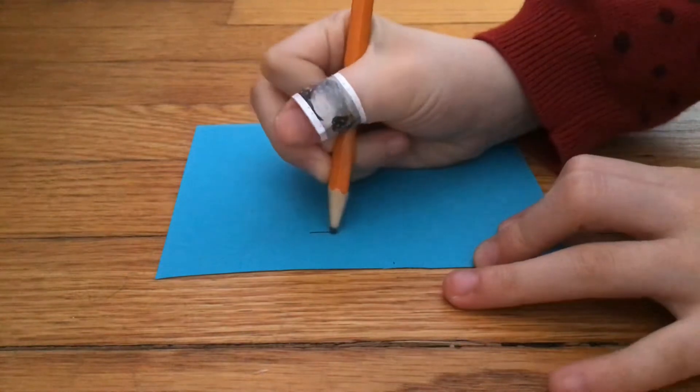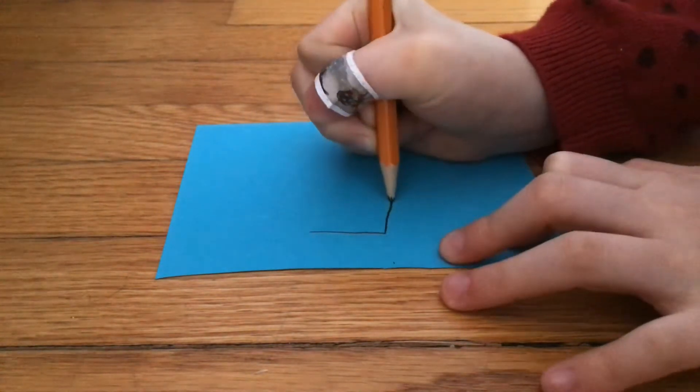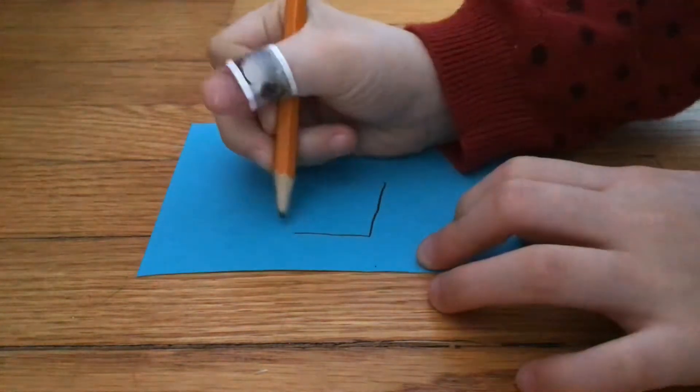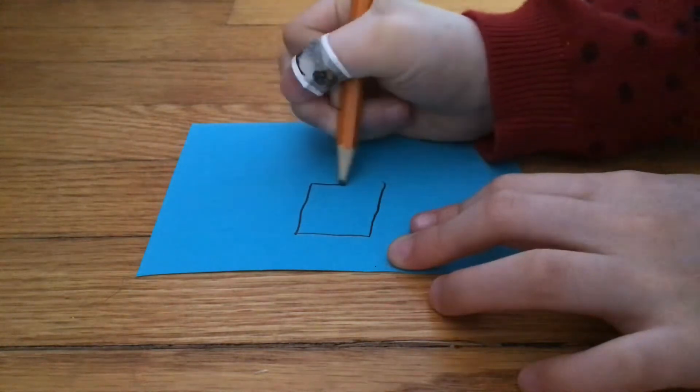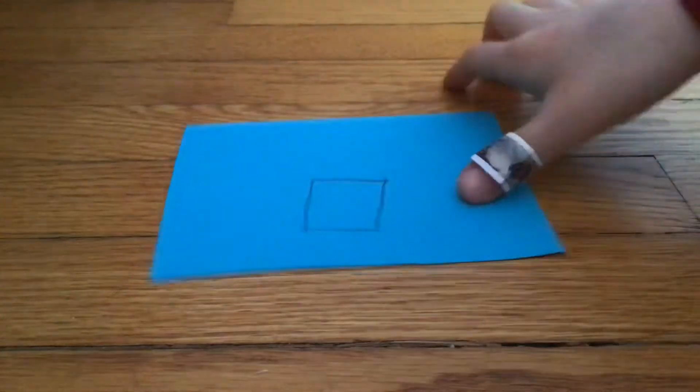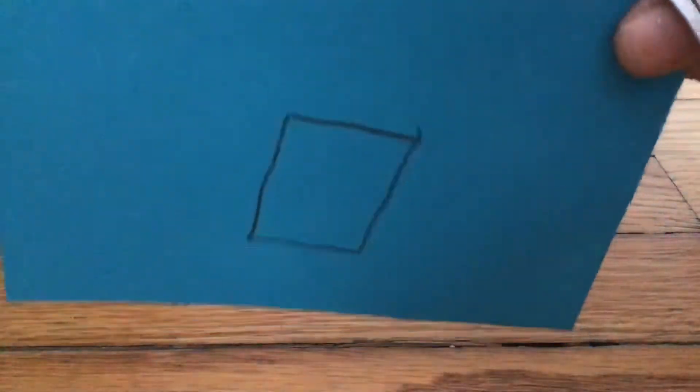We're going to do a nice square. And this one, I can just make it closer. Oh, that's too close. A nice square.